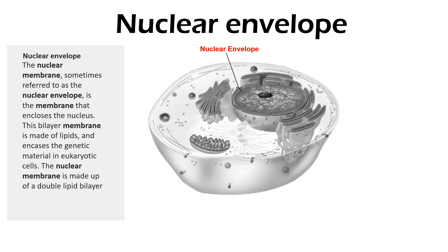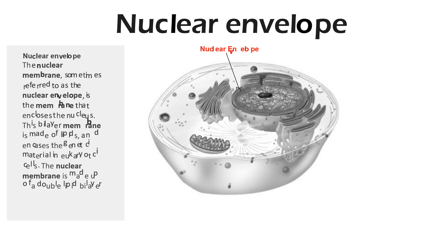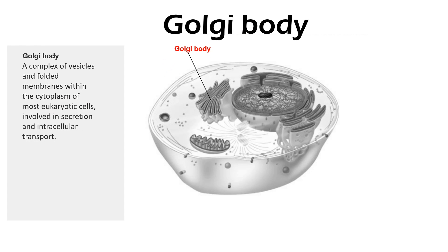This bilayer membrane is made up of lipids and encases the genetic material in eukaryotic cells. The nuclear membrane is made up of a double lipid bilayer. The Golgi body is a complex of vesicles and folded membranes within the cytoplasm of most eukaryotic cells, involved in secretion and cellular transport.